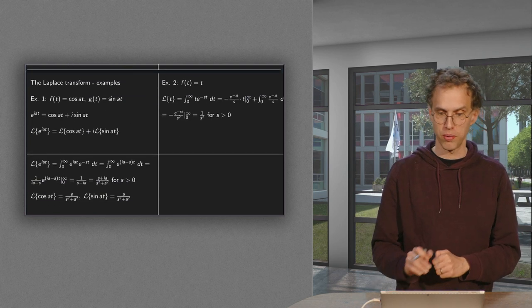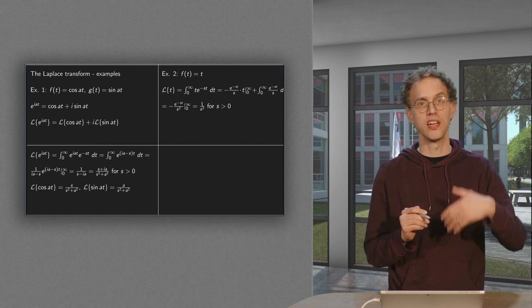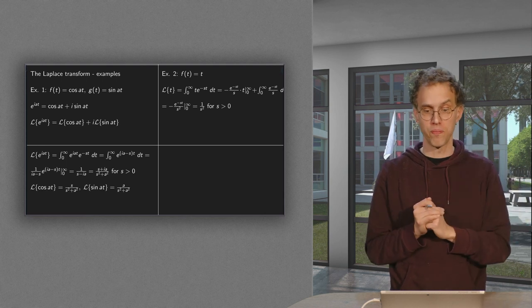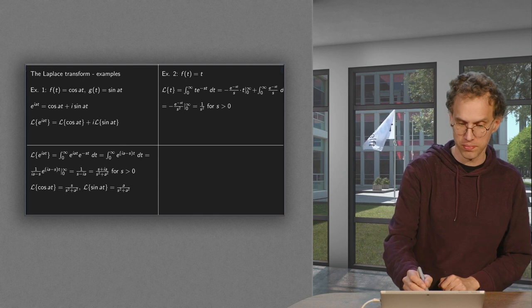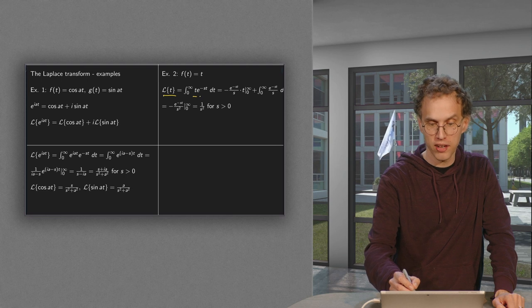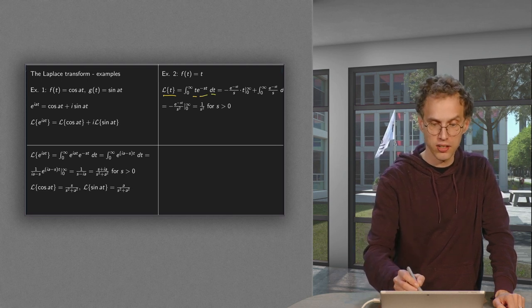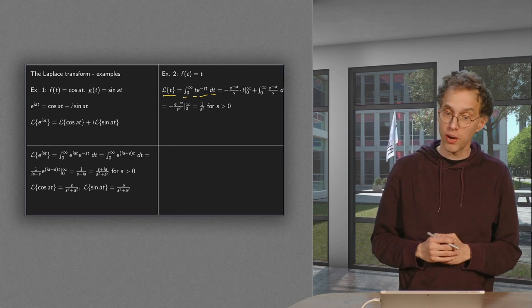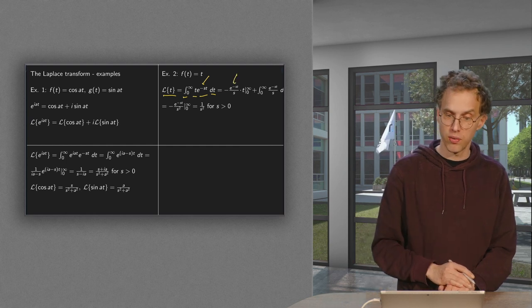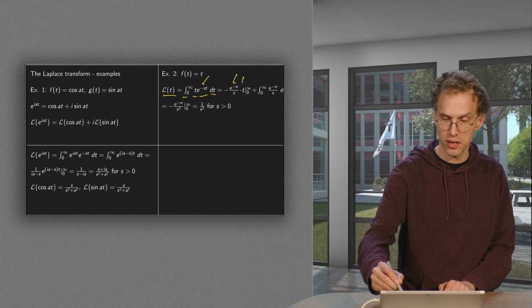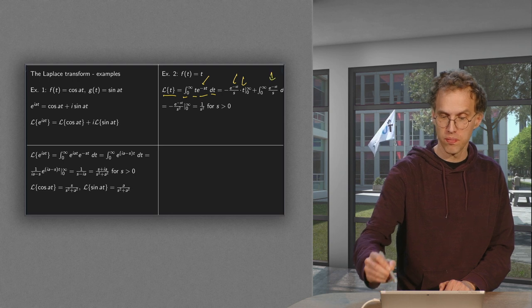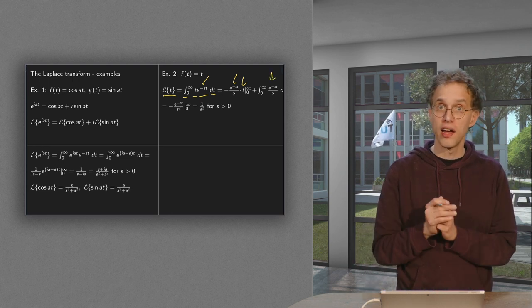Now moving on to polynomials. First f(t) = t, then t², then we will recognize a pattern and do t to the power n for n positive. For the Laplace transform of t, we put t here, multiply with e to the power minus s·t, and integrate over t from 0 to infinity. Here we have to use integration by parts: integrate the exponential, giving minus 1 over s times e^(−st), and leave the t, evaluated between 0 and infinity, minus the remaining integral of e^(−st)/s dt.